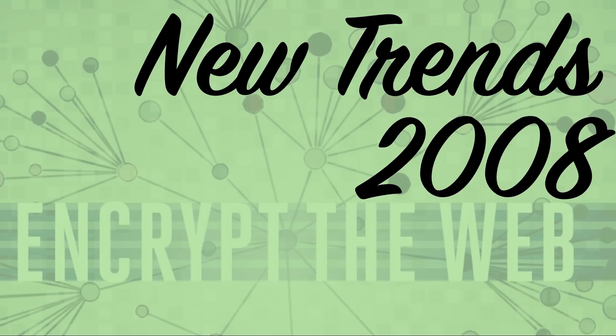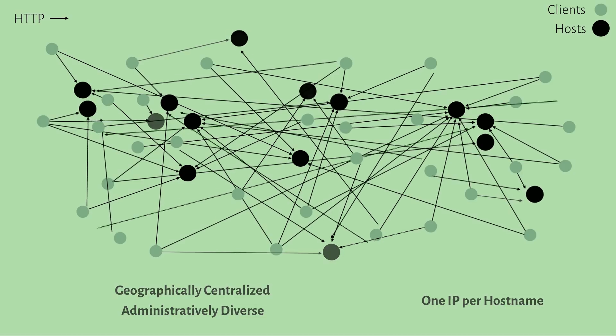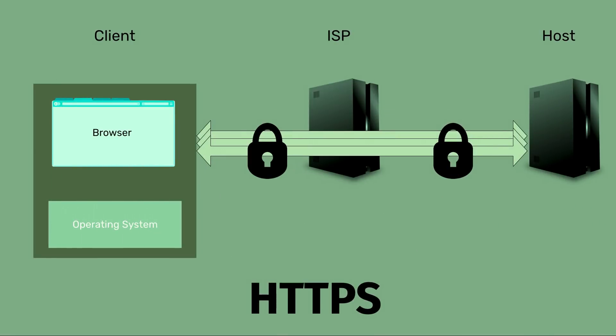Two major evolutions of the web since the early days are shared hosting and encryption. The internet evolved from a somewhat centralized but administratively diverse environment to one where many websites are hosted and managed by the same providers, resulting in more centralization. HTTPS is the protocol that provides encryption — it ensures nobody can read your content in transit, which is a huge upgrade for privacy. However, it doesn't close all privacy loopholes, and it's somewhat harmful for latency because establishing an HTTPS connection requires several round trips to establish shared cryptographic keys.